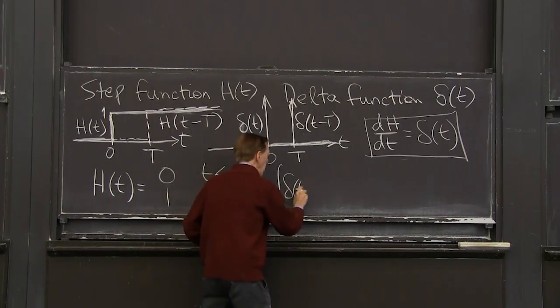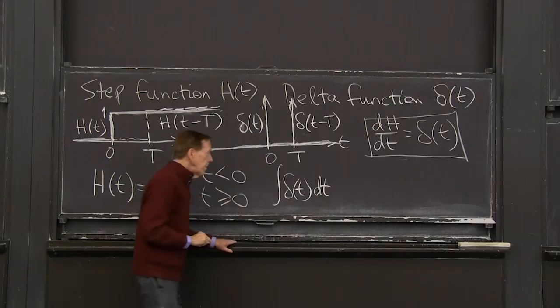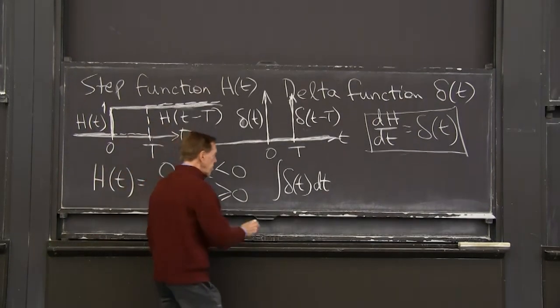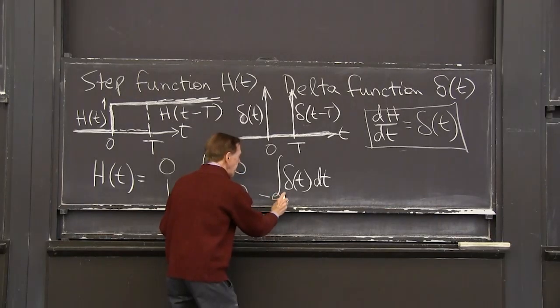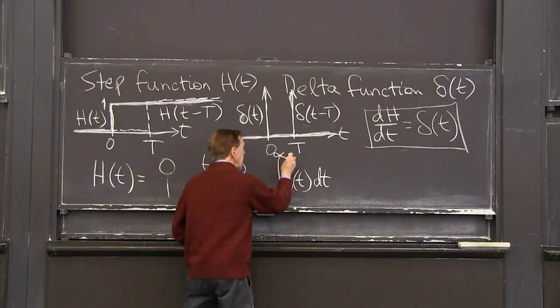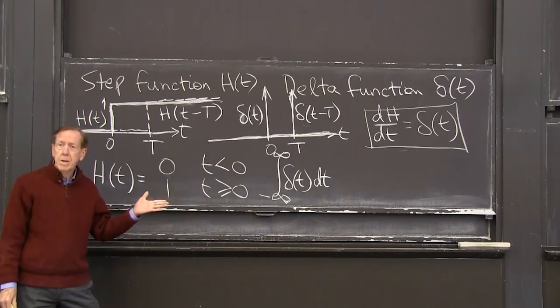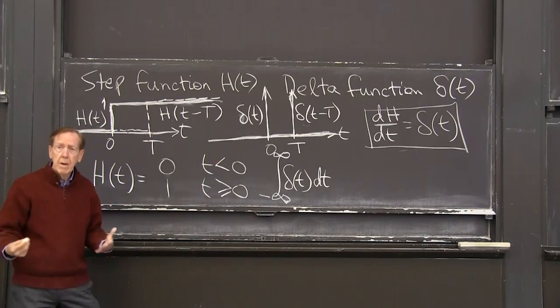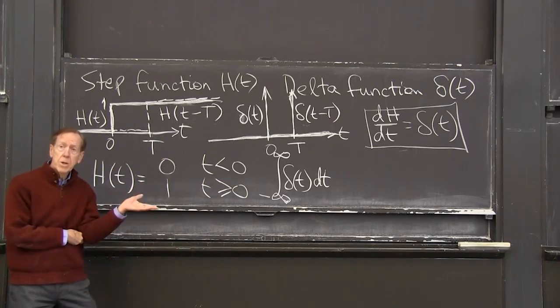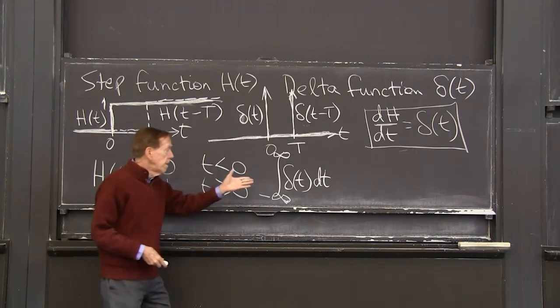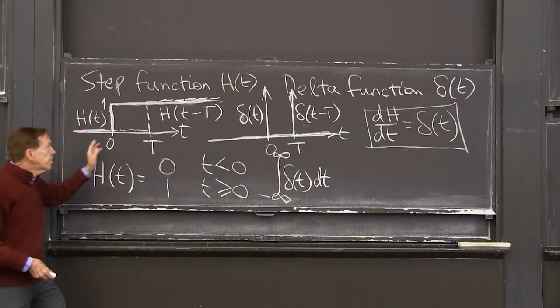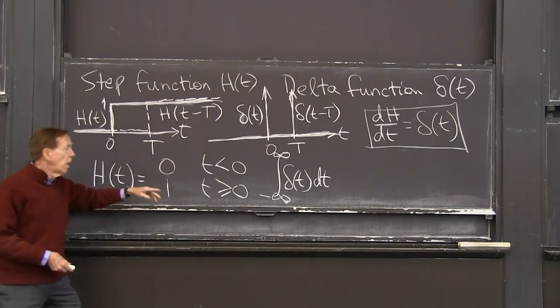So the key property of the delta function is to know what its integral is. The integral of the delta function is the total deposit over, let's say, started. Time could have started even at minus infinity. And it could go on forever to plus infinity. So that's the total deposit, the total input coming from this source term delta of t. And what is the answer? Well, the integral of delta should be the step function.